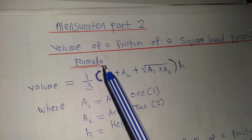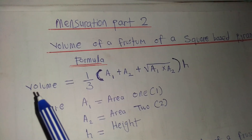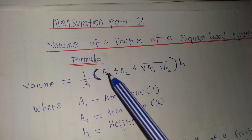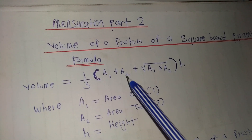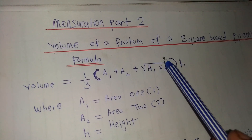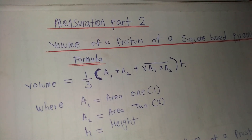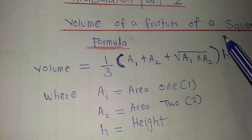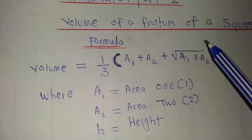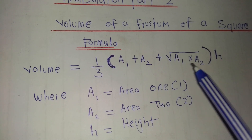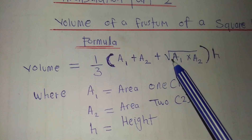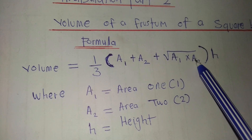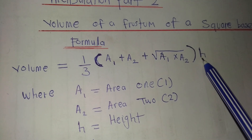The formula that we'll be using is this one: Volume equals 1 over 3, times (A1 plus A2 plus square root of A1 times A2). In the square root, we have A1 times A2 — the same A1 and A2, we just multiply. Then this value is the height.